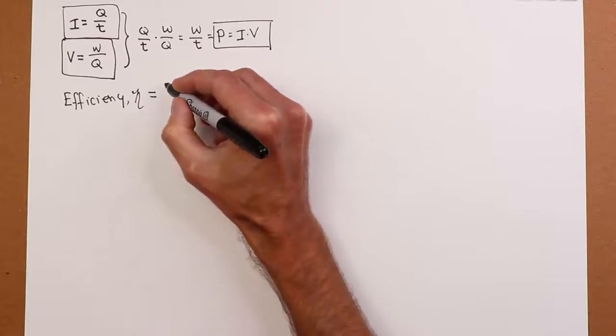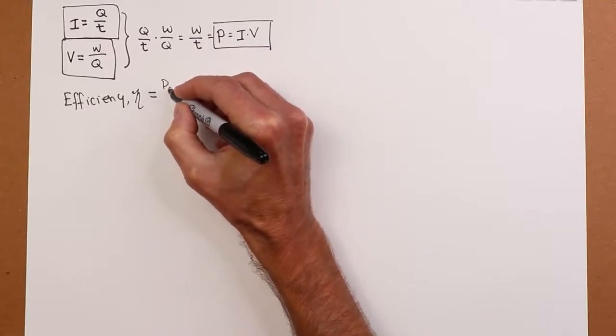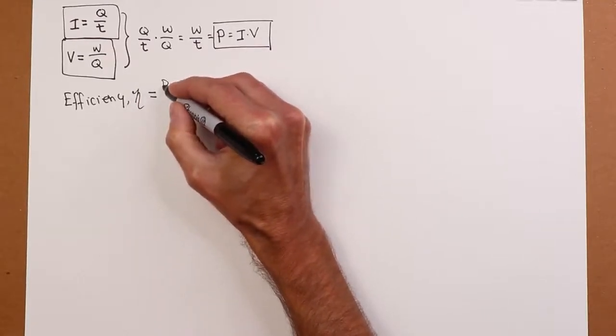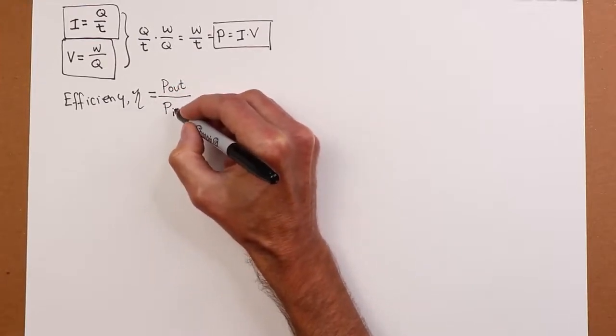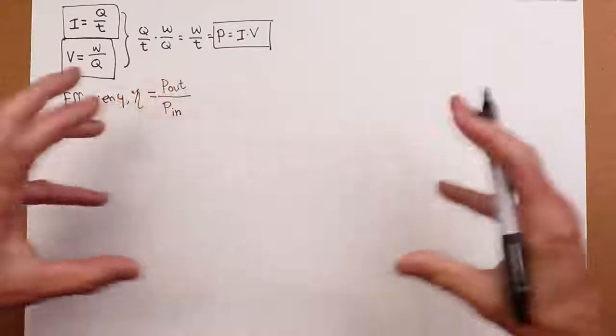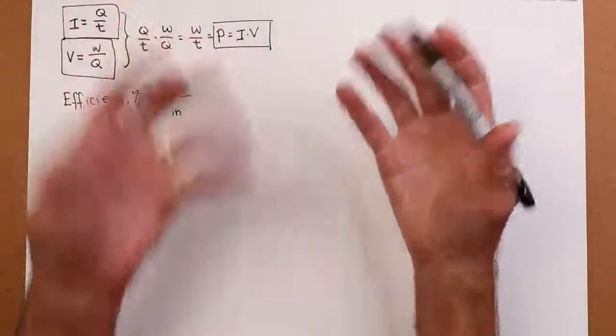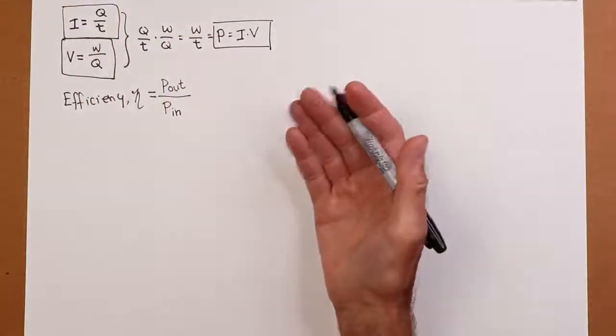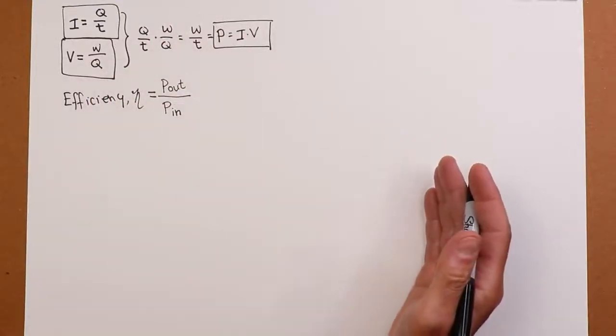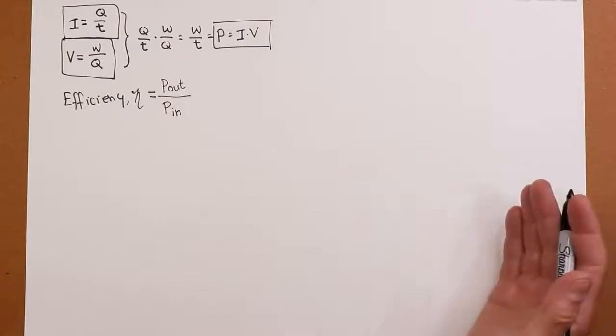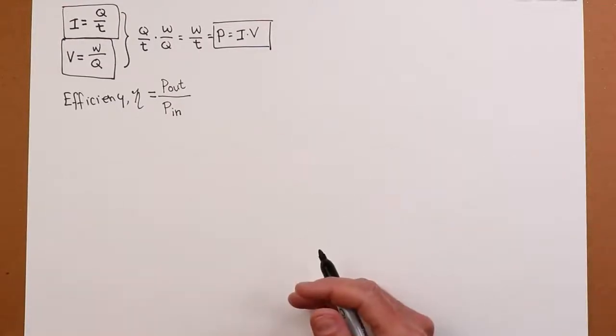This is defined as the power you get out versus the power you put in to get it. What did you have to put in to get this output? Obviously, the higher the efficiency, the better. In an ordinary system like this, efficiency can never be greater than 100%. It can never really be equal to 100%. That would assume that there's no loss in the system.